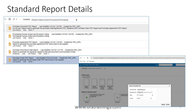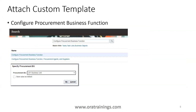Rather than designing it from scratch, you can find the list of existing standard templates, modify an existing one, and play around with it. Or you can design it from scratch. Generally the best practice is to get a standard template, modify wherever required, and upload the custom template. Simply click Upload and upload your custom template.